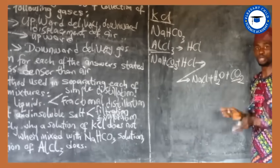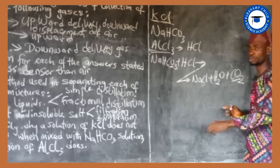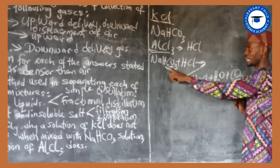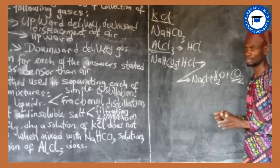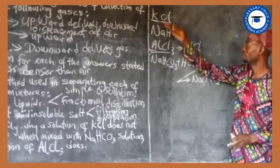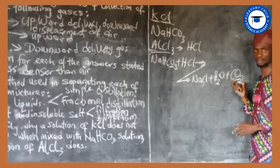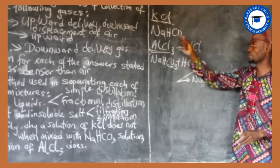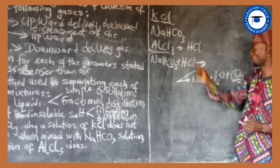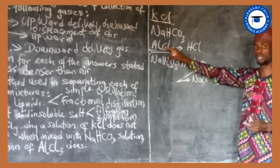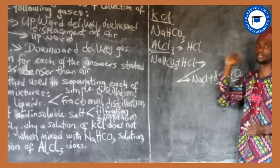In summary: KCl will not react with NaHCO3 to produce a gas because it does not hydrolyze. Aluminum chloride hydrolyzes to give hydrochloric acid, which reacts with sodium hydrogen carbonate to produce carbon dioxide gas. That is the reason why KCl will not give a gas whereas AlCl3 will. Thank you.